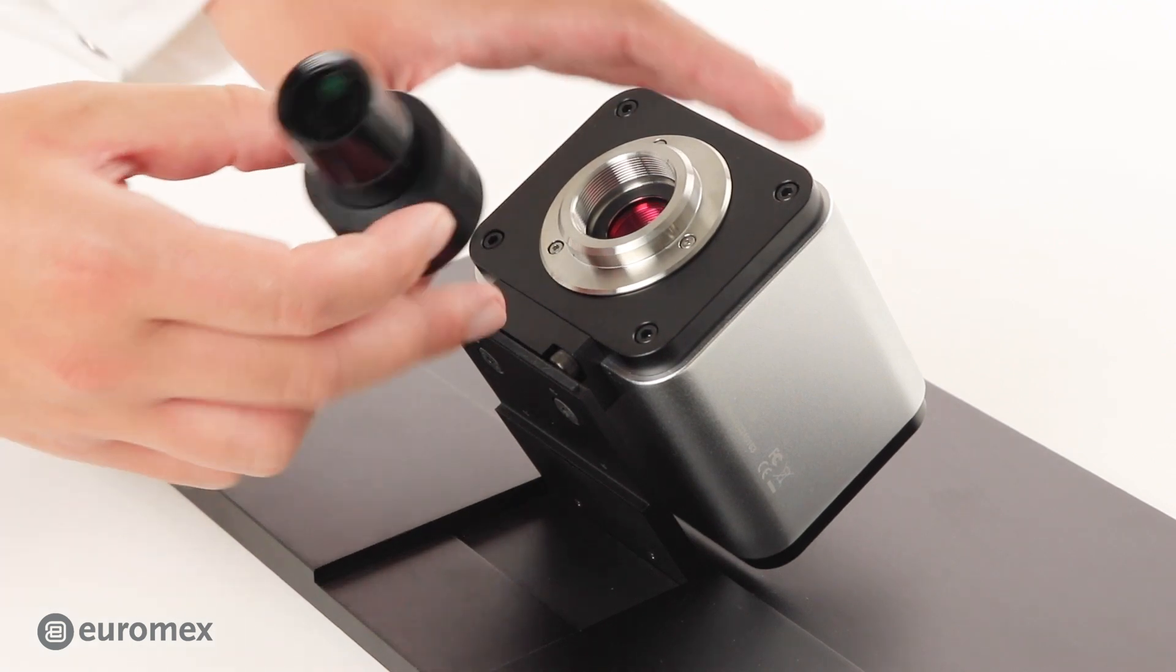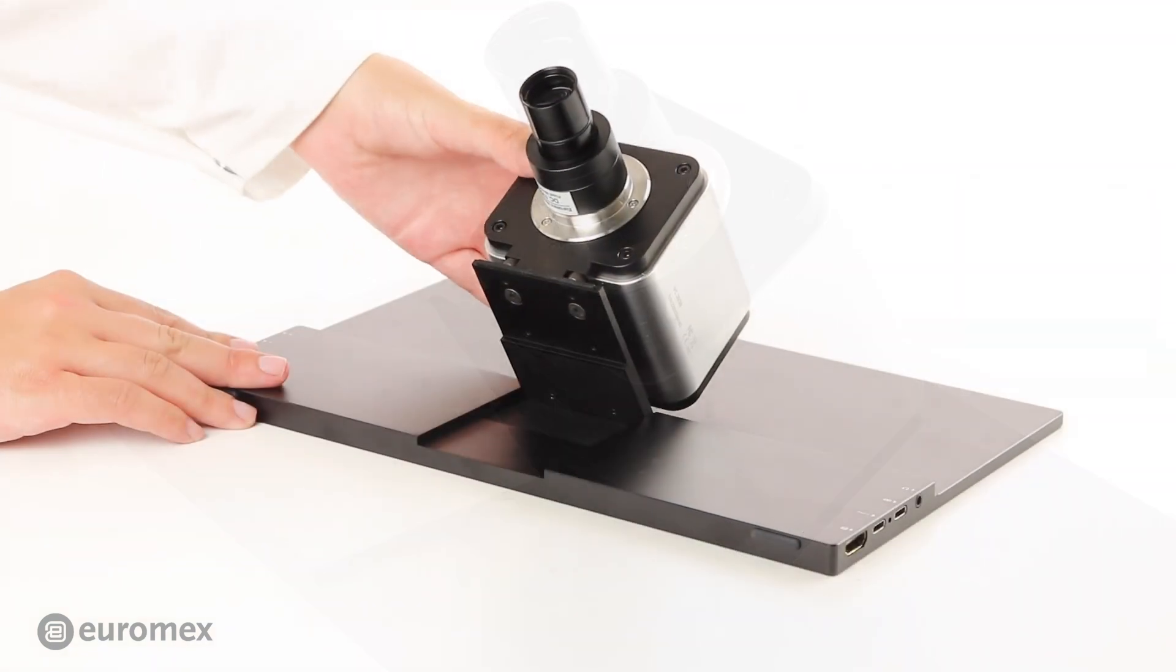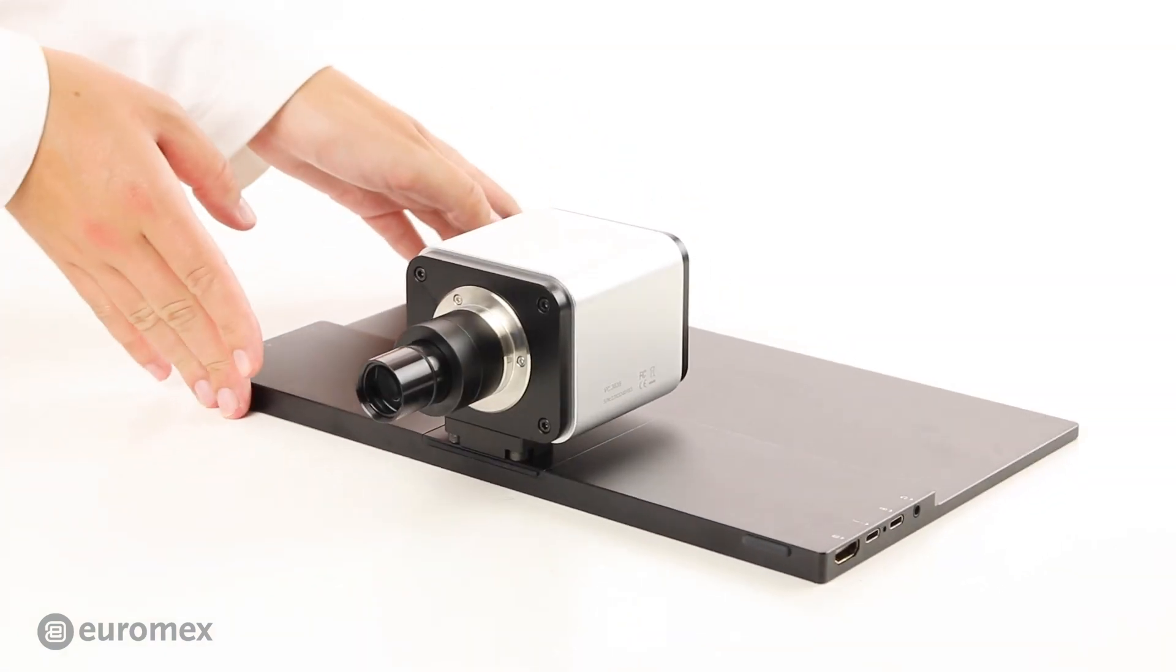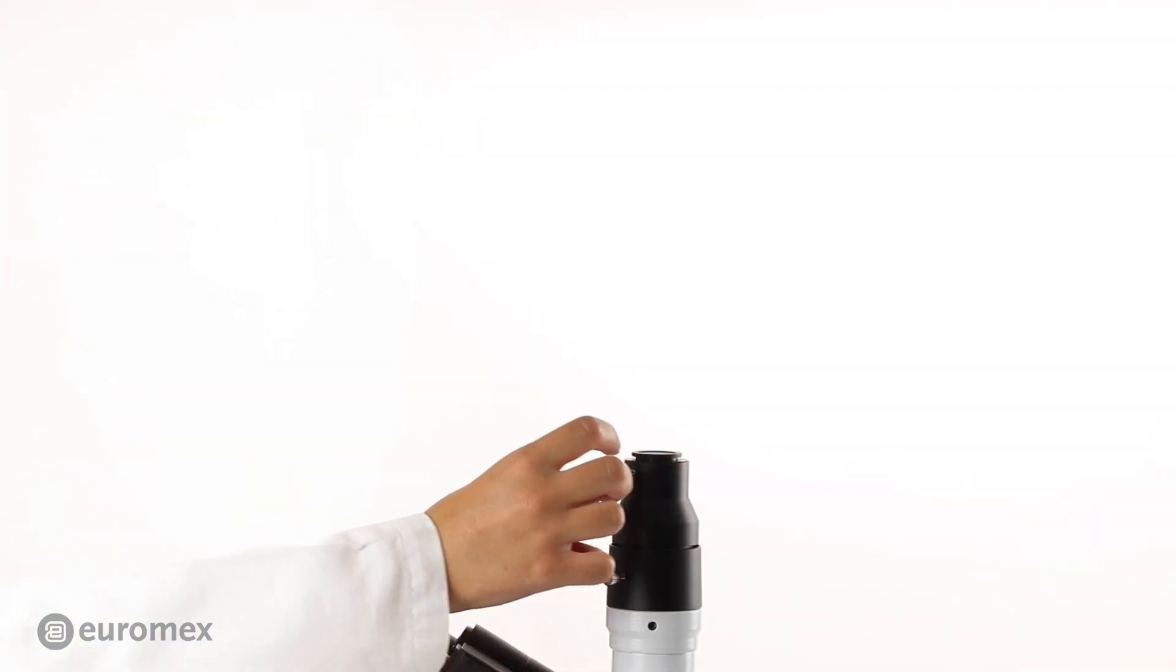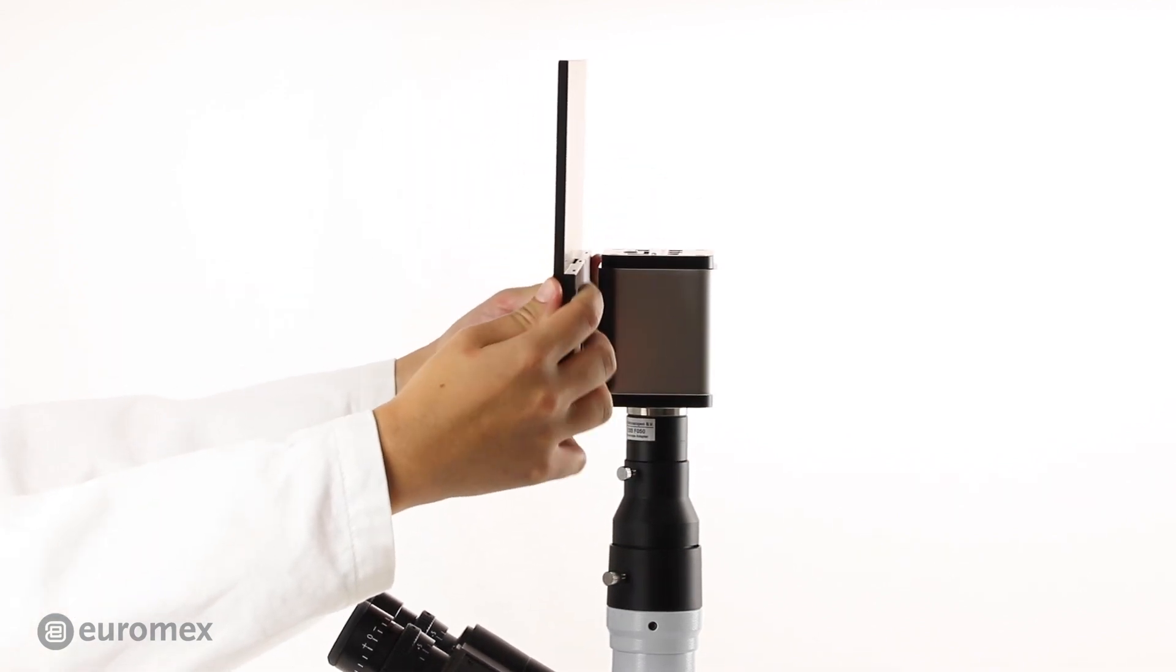Attach the included C-mount adapter to the camera. Remove the dust cover of the photo tube. Place and fixate the camera.